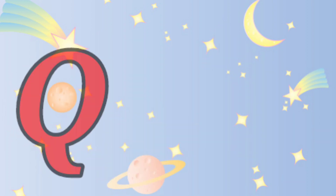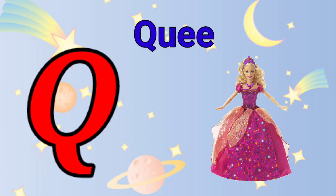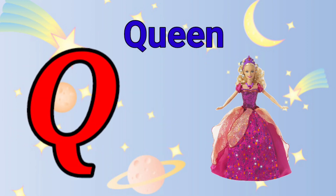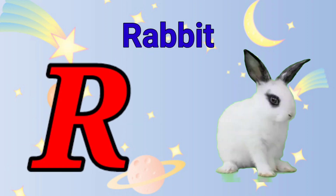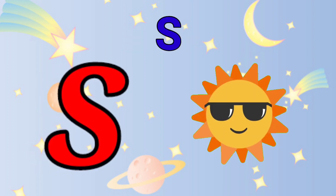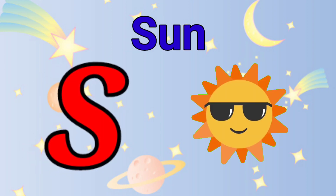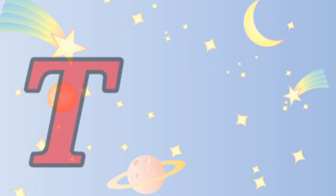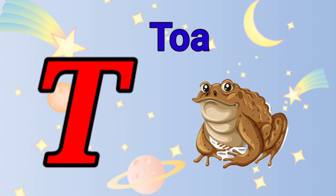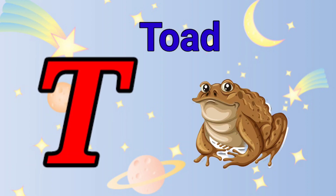Q is for queen, k-k-queen. R is for rabbit, r-r-rabbit. S is for sun, s-s-sun. T is for toad, t-t-toad.